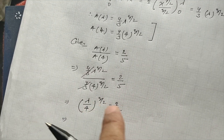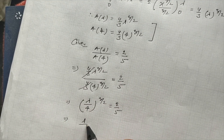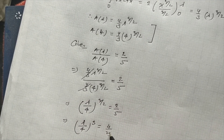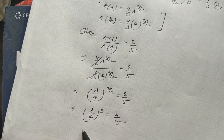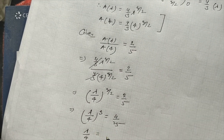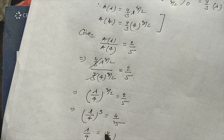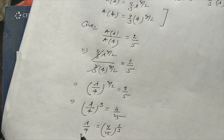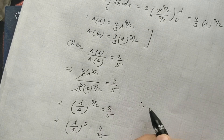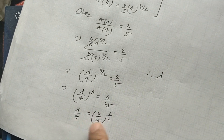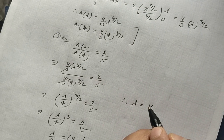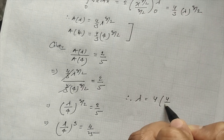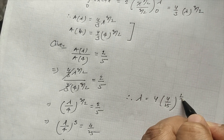Squaring both sides, (λ/4)³ equals 4 by 25. Therefore, λ/4 equals (4/25)^(1/3), which gives us λ/4 equal to the cube root of 4 over 25, so λ equals 4 times (4/25)^(1/3).